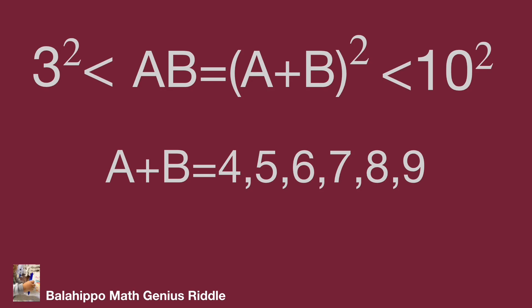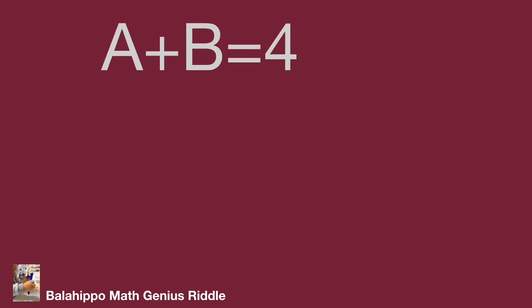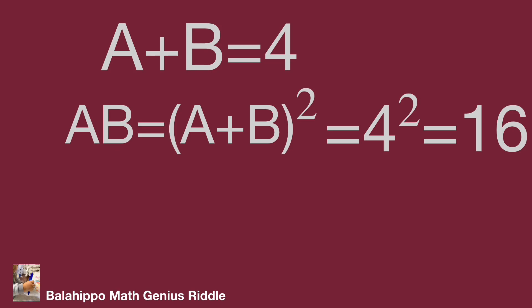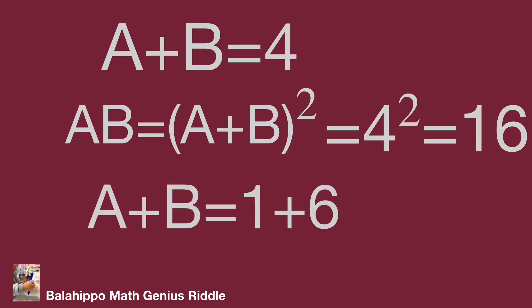After that, just check each condition to find the numbers. Let's check one by one. While A plus B equals 4, AB equals the quantity A plus B squared equals 4 squared equals 16. The new number gives A plus B equals 1 plus 6 equals 7. That is different from A plus B equals 4, so it is not the right value.